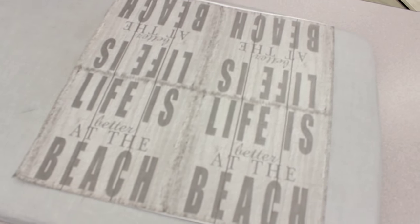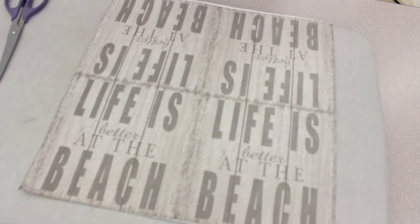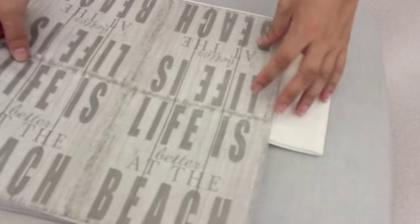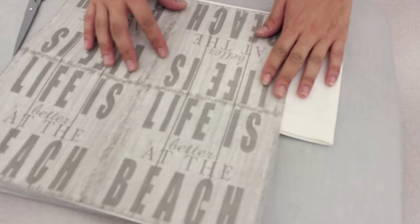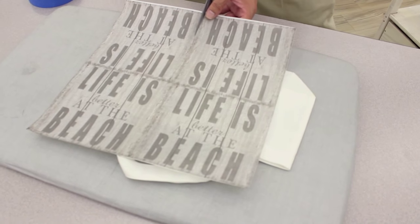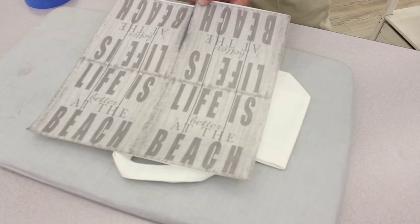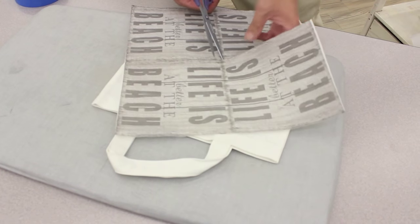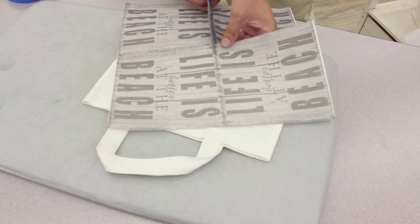And now we will grab our scissors and just kind of place it on the bag where you want the picture to set, cut out the image that you want. It's nice because the deco film has made our napkin a little bit firm so it's really easy to cut.